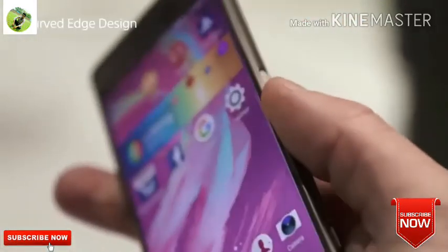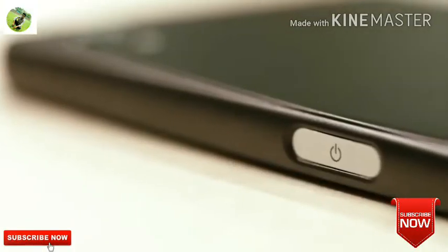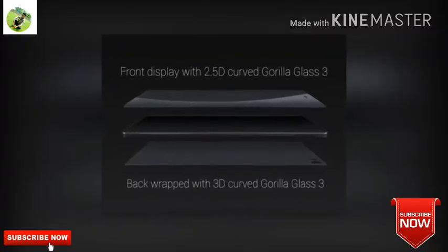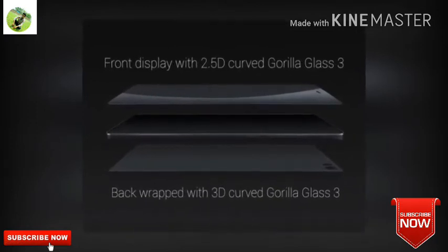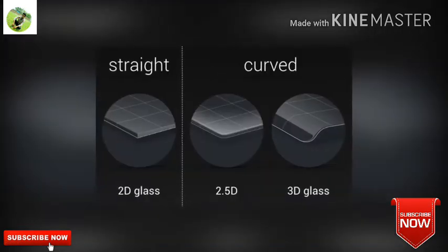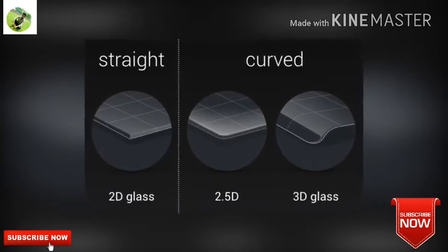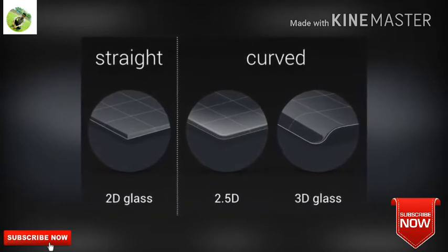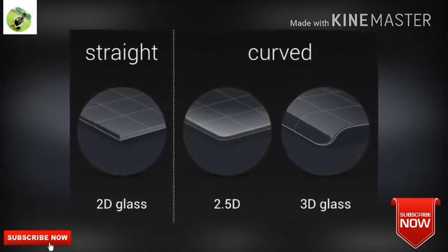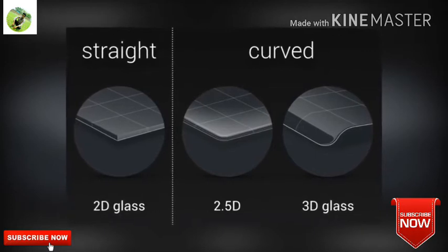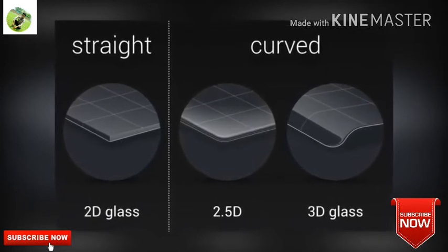Now let's talk about 2.5D curved glass. 2.5D means something between 2D and 3D. 2.5D curved glass is a type of display design. Normal 2D glass is like a box shape — the edges are sharp and the corners are very straight. In the 2.5D design, the edges are all smooth and the corners have a rounded shape.